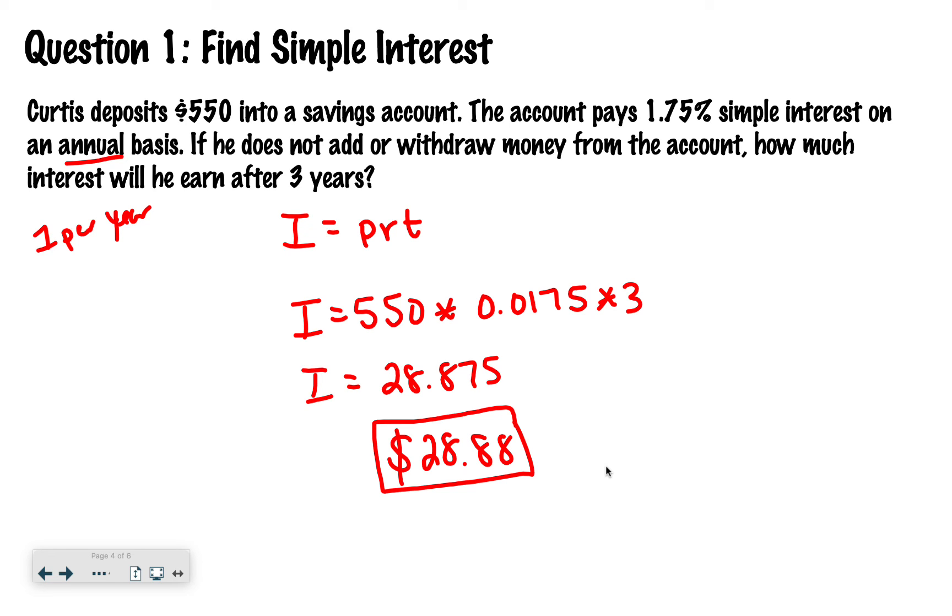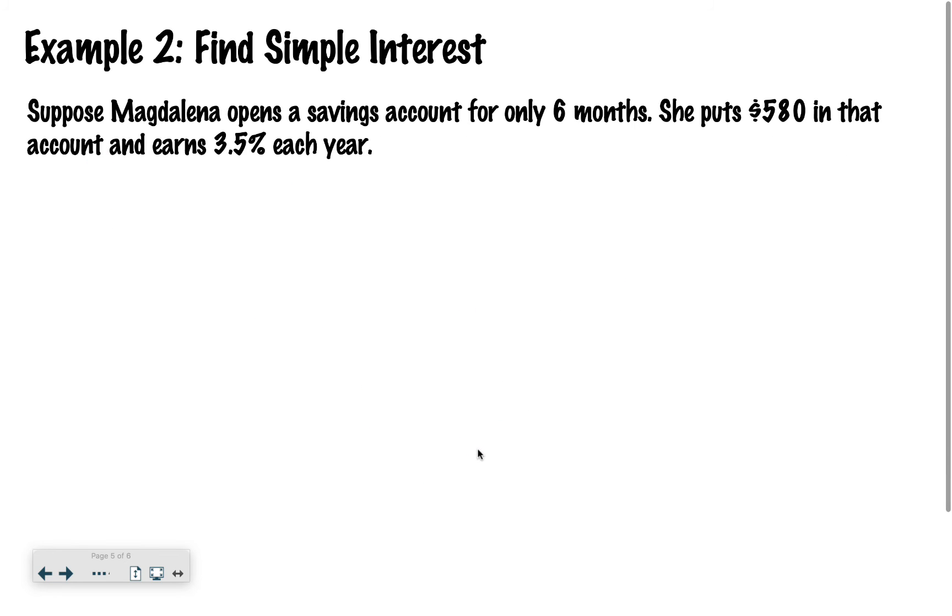All right. Hopefully you set it up like this first line right here. And then when you multiplied it, you got $28.875. But since we're talking about money, we always round to just two decimal places. So this five is going to change that seven into another eight. So it's $28.88.